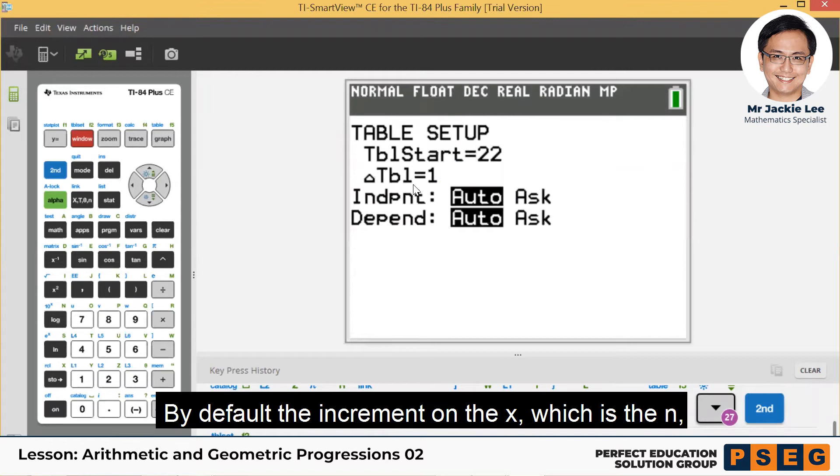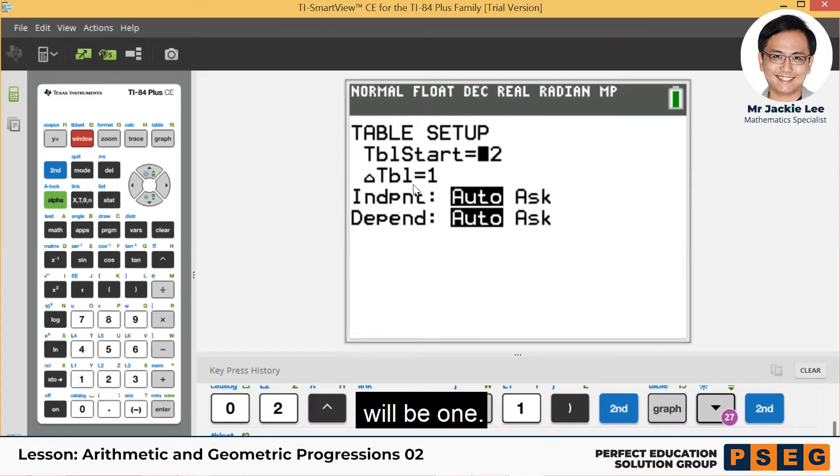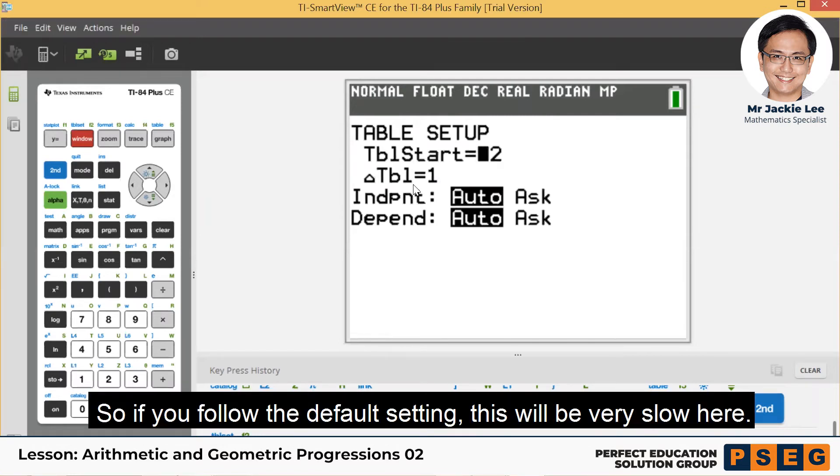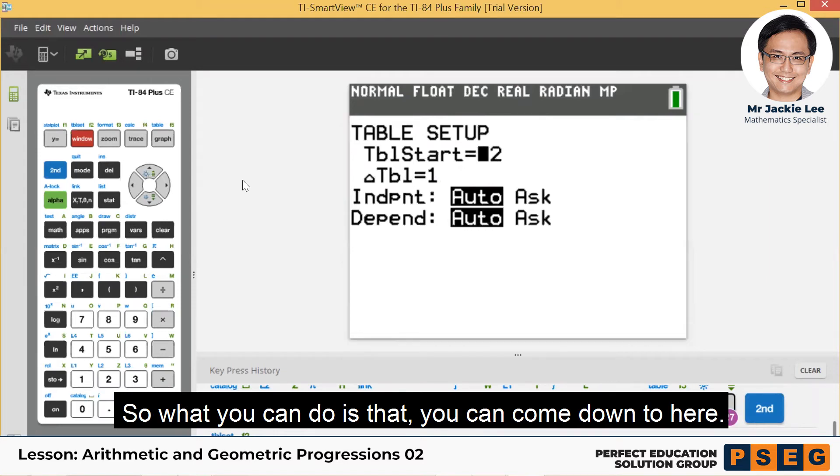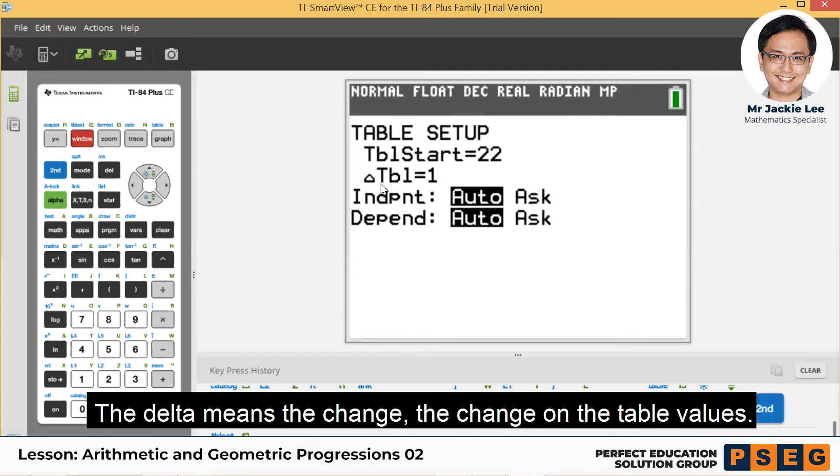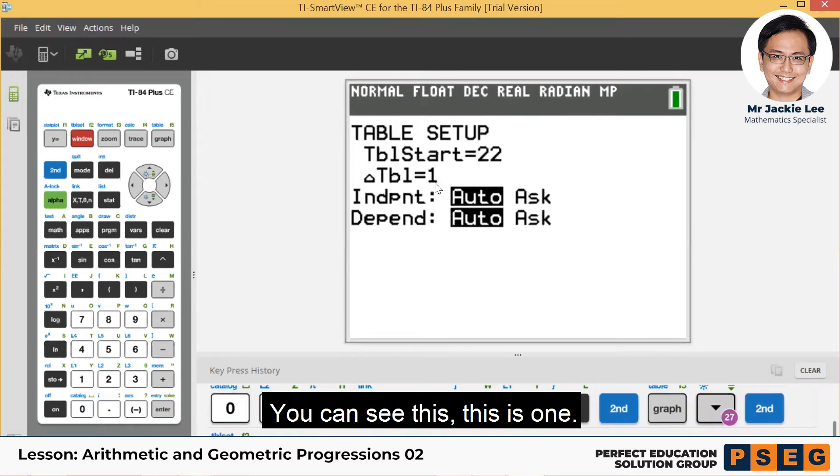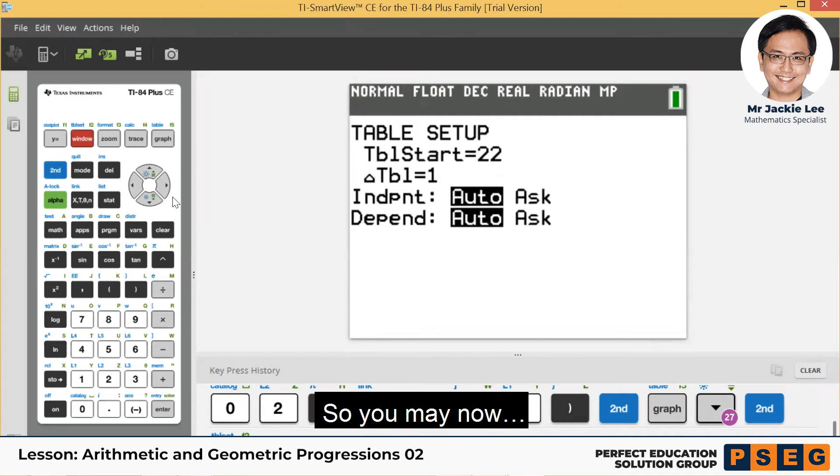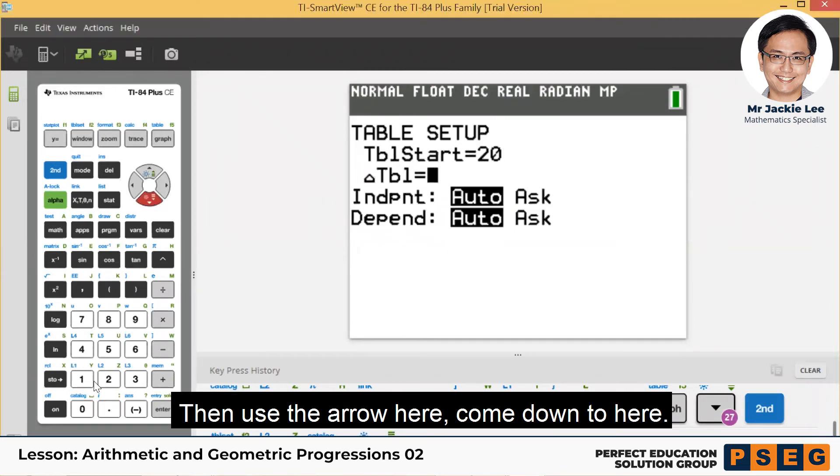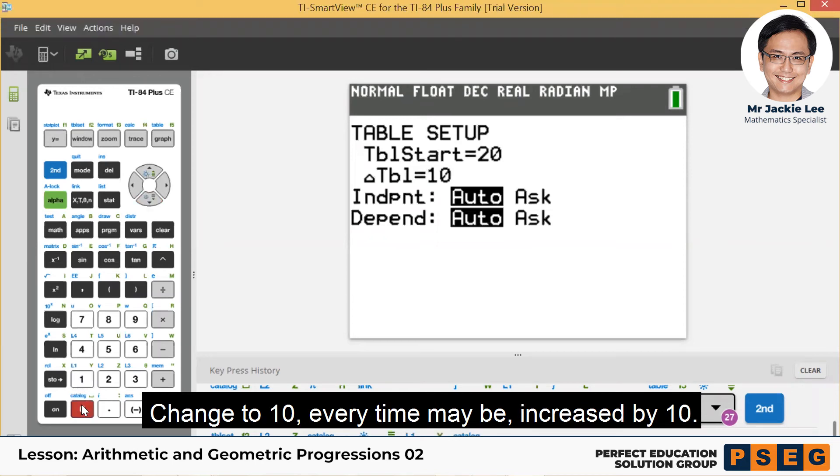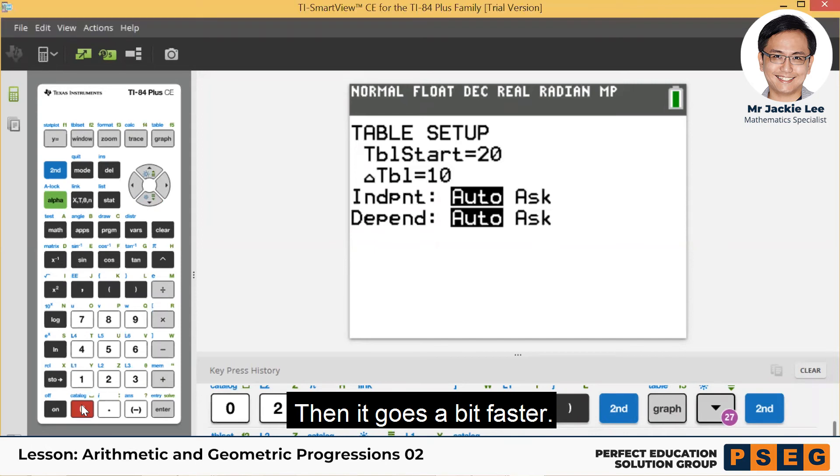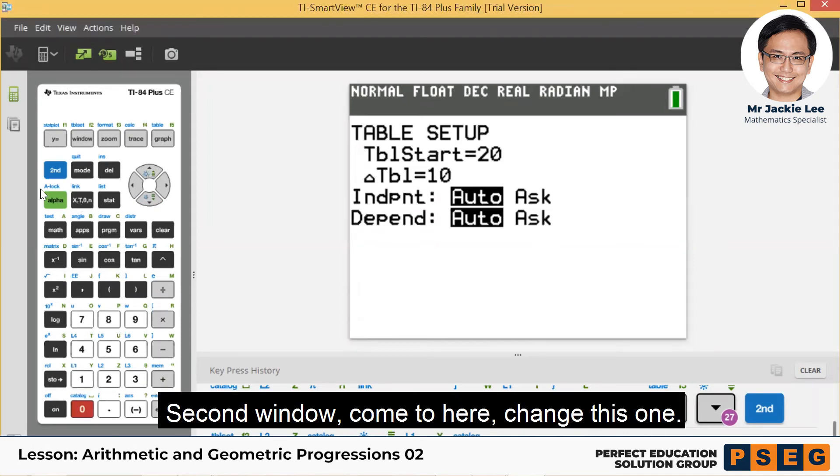This is basically by default, the increment on the x, which is the n, will be 1. So it will follow this default setting, it will be very slow here. So what you can do is that you can come down to here. This is called the delta. Delta means the change, change on the table values. You can see this one. So you may now, maybe here I change to 20 first. Then this is where we start. Then use the arrow here, come down to here, change to 10, every time maybe increase by 10. Let it go a bit faster.